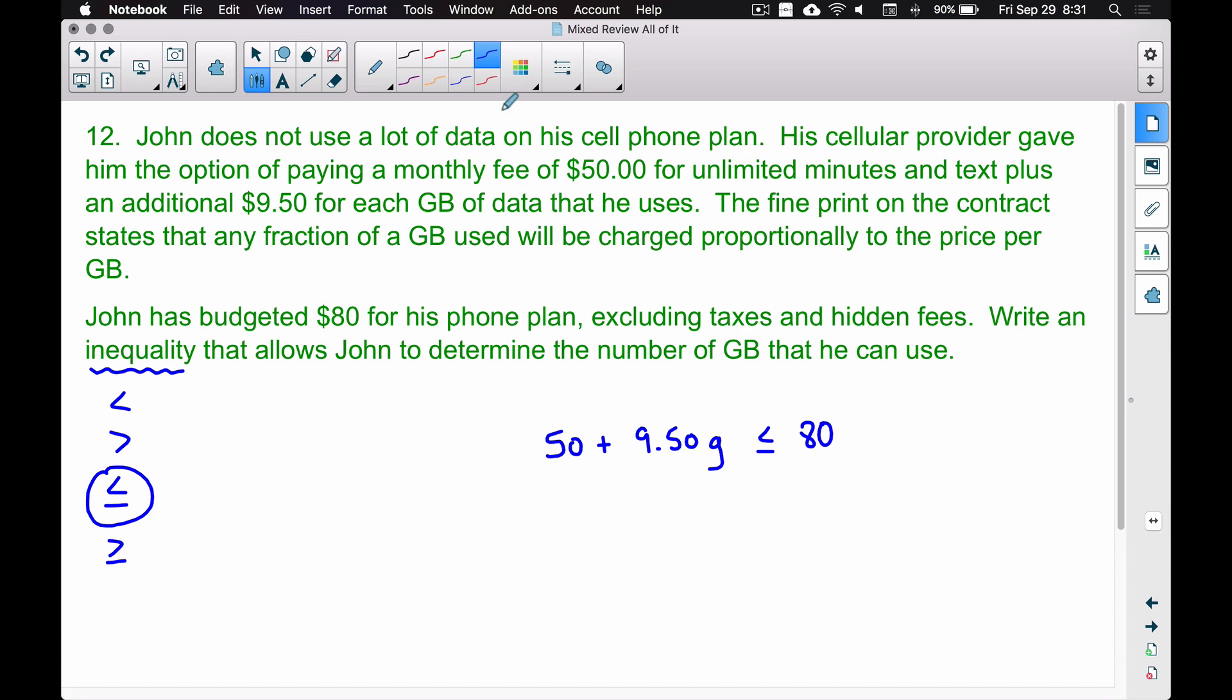Let's solve this inequality. We solve an inequality just like an equation. We're going to subtract that 50 from both sides, and on the left-hand side we have 9.50 times the number of gigabytes is going to be less than or equal to 30. I hope that makes sense. If you think about it, John's budgeting $80 for his total plan. Automatically out of that $80, 50 of it's going to go for the monthly fee. That leaves him with $30 to pay for data.